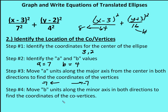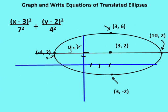Moving 4 units up and 4 units down from the center gives the co-vertices. With center (3, 2), moving 7 units right and 7 units left gives vertices at (10, 2) and (−4, 2). Moving 4 units up and 4 units down gives co-vertices at (3, 6) and (3, −2).